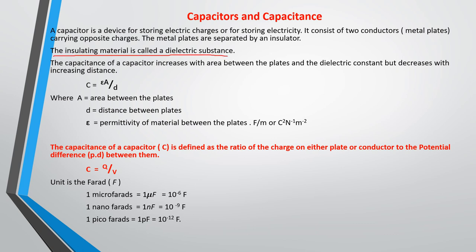The capacitance of a capacitor increases with the area between the plates and the dielectric constant, but it decreases with the distance between the plates. Capacitance is directly proportional to the area between the plates and inversely proportional to the distance between the plates. The constant of proportionality is known as the permittivity of the material between the plates, denoted epsilon. These are some of the factors that affect the capacitance of a capacitor.